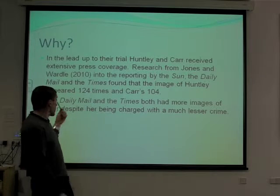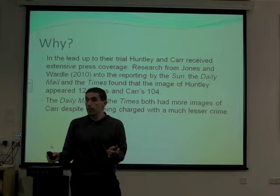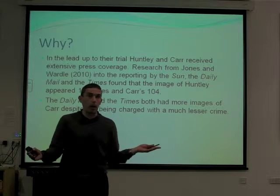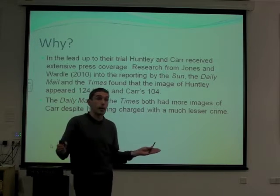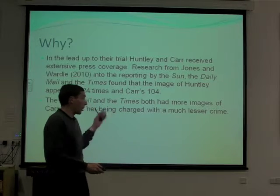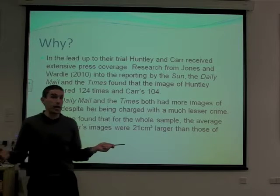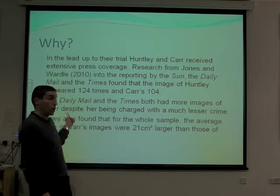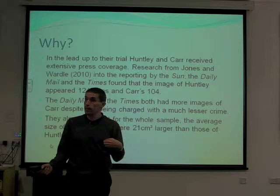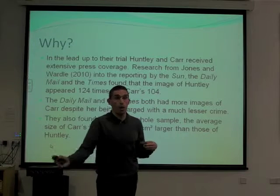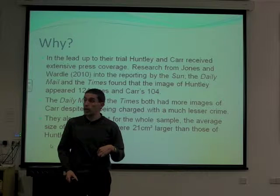In fact, the Daily Mail and the Times had more images of Maxine Carr than they did of the suspected murderer Ian Huntley. And for the whole sample of newspapers researched, the average size of Carr's images were 21 centimetres squared larger than that of Ian Huntley's. So not only did Maxine Carr's photographs appear almost as often as Ian Huntley's, her photographs were larger than those of the man charged with the serious crimes of double murder.